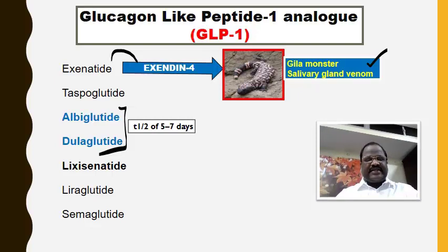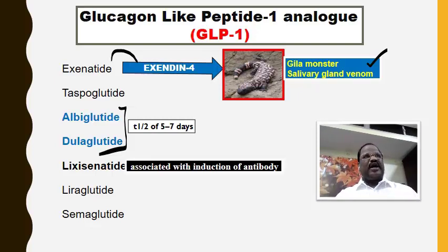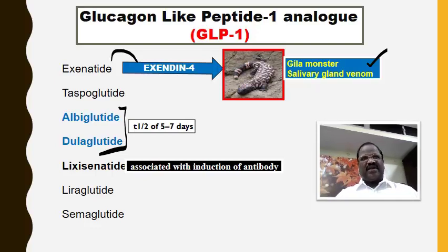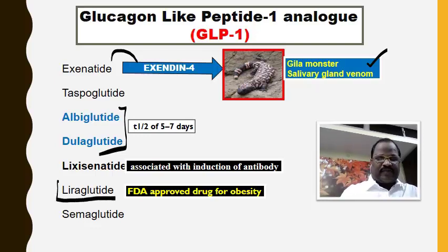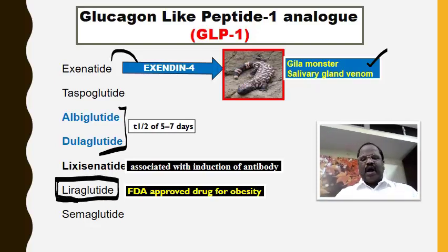Lixisenatide may be associated with the induction of antibody formation. One very important MCQ point: among the GLP-1 analogs, all will cause weight loss. All GLP-1 analogs cause weight loss. Among them, liraglutide got FDA approval for treatment of obesity. An anti-diabetic drug approved for treatment of obesity is liraglutide, a GLP-1 analog.